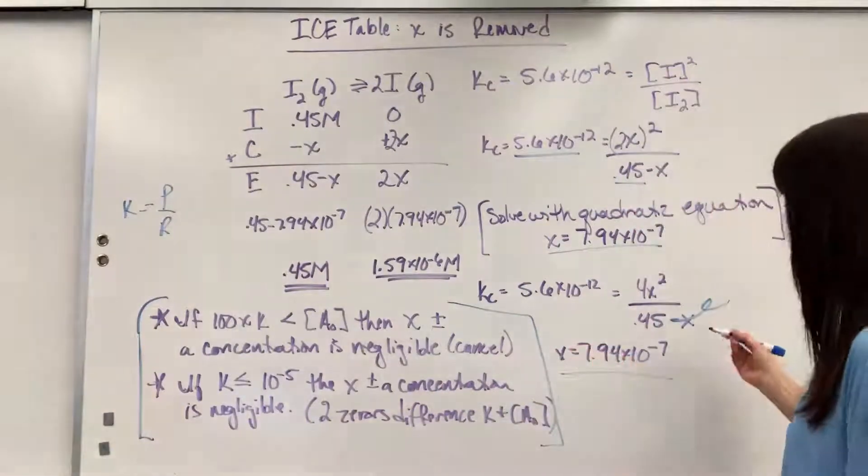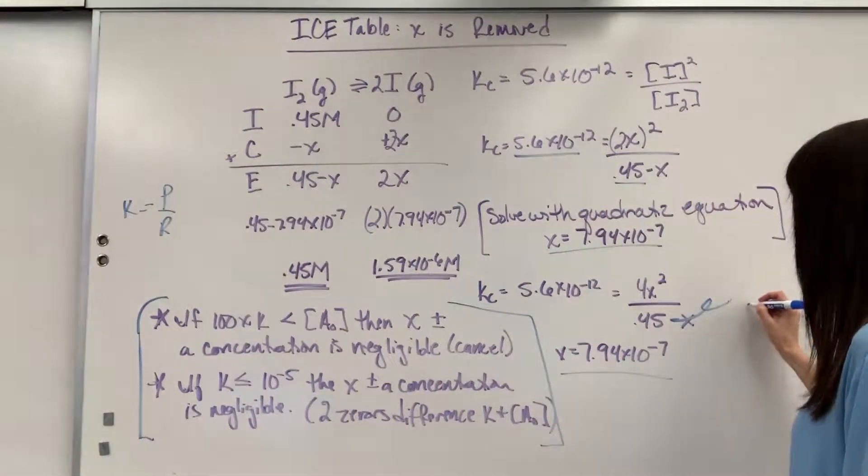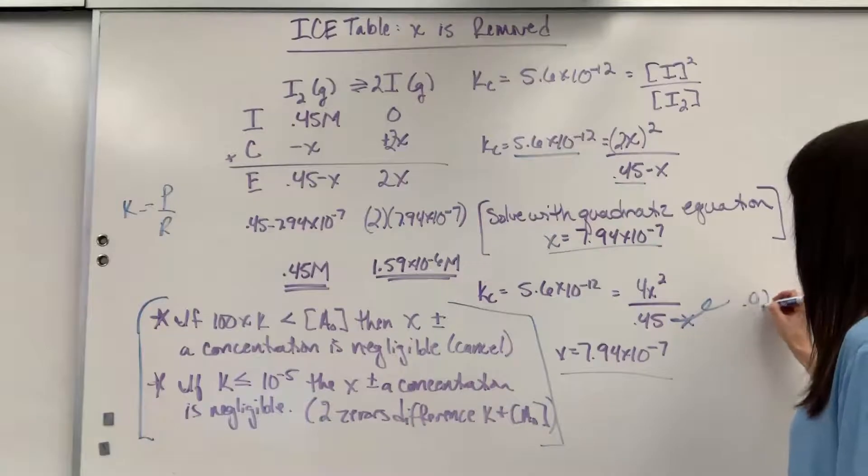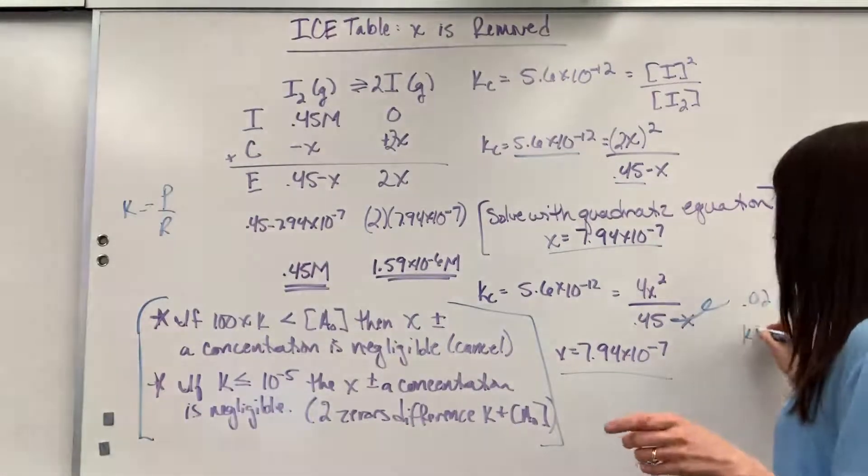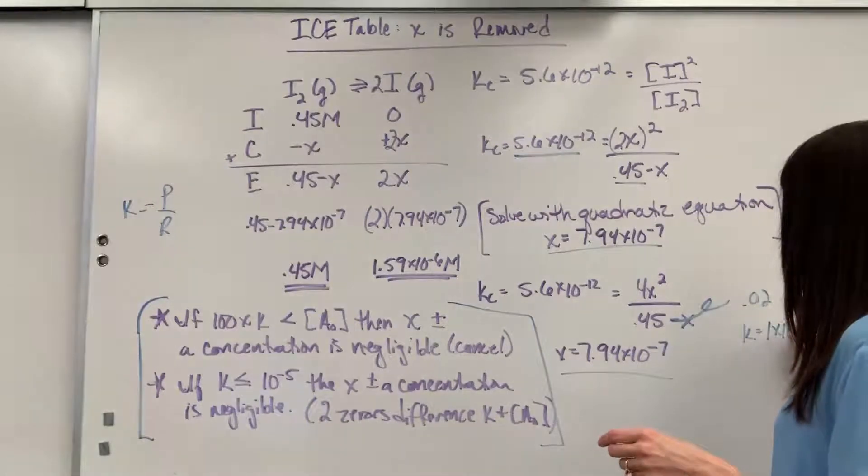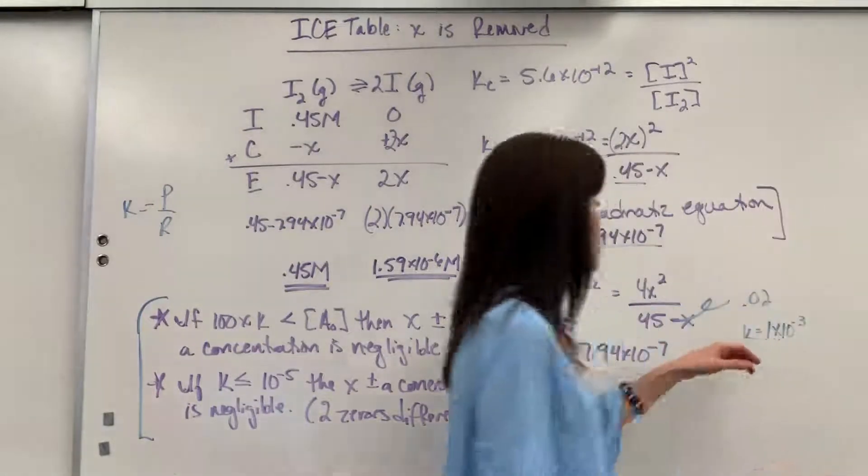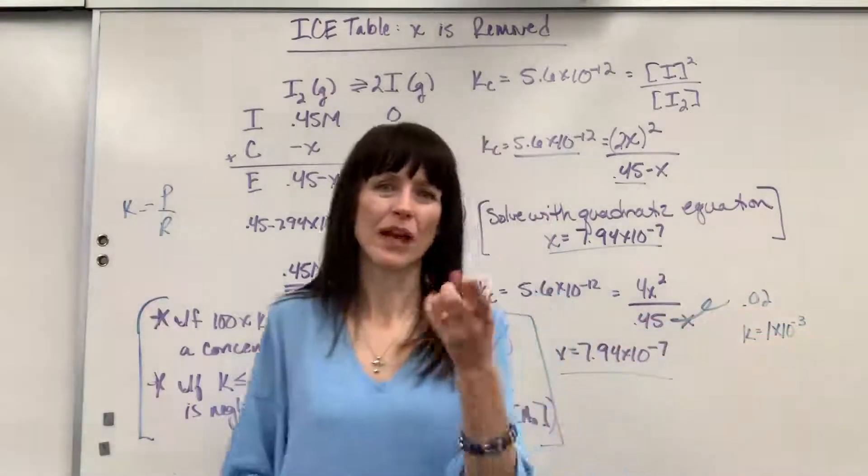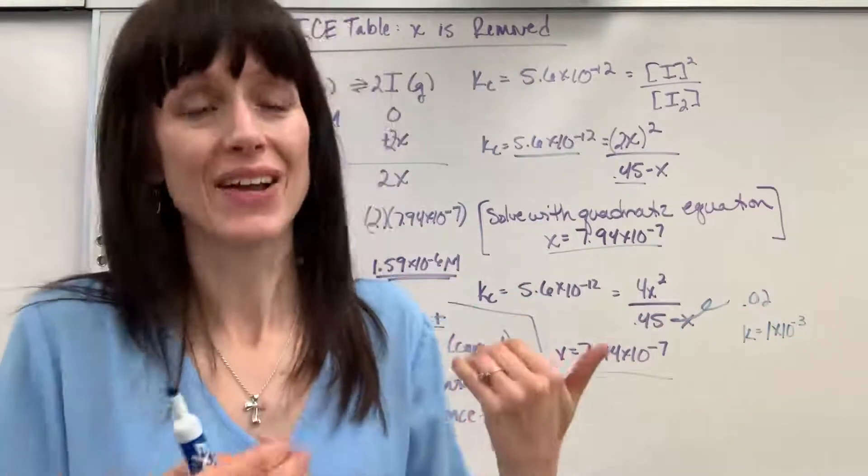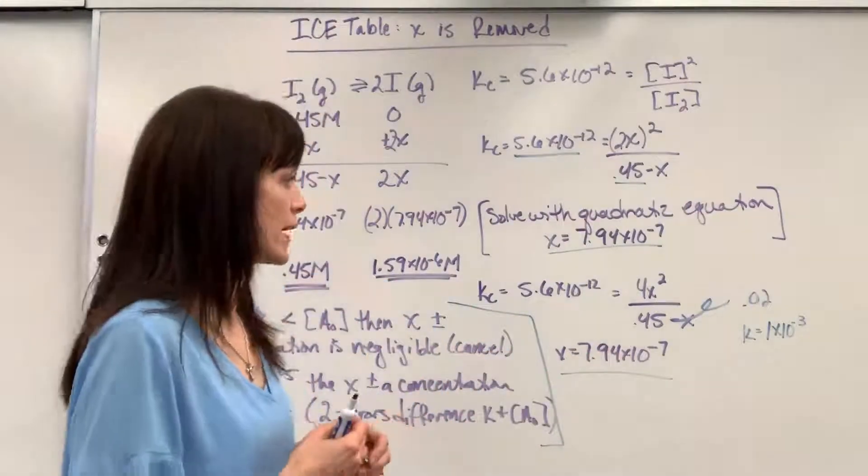For example, if I had like a 0.02 for my concentration, and if K equaled 1 times 10 to the minus 3, well, this would be 10 to the minus 2. That's 10 to the minus 3. I only have a factor of 1, 0, 10 difference. I'd have to do the quadratic equation on that.